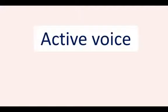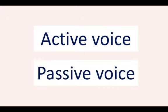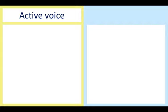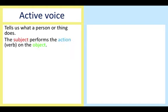A sentence can be written in the active voice or passive voice. It's important to try and use both when writing. Active voice tells us what a person or thing does. The subject performs the action on the object. The sentence structure is subject plus the action plus the object.